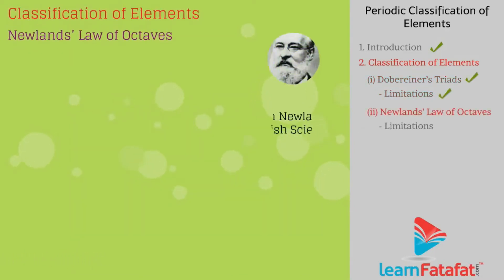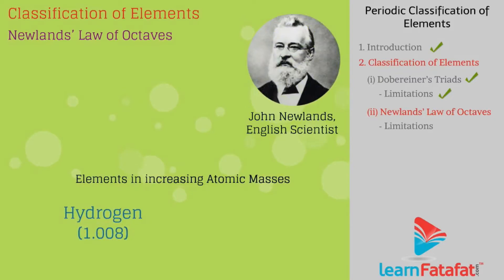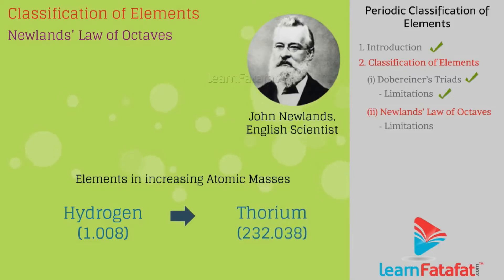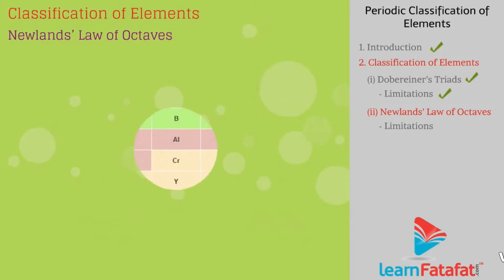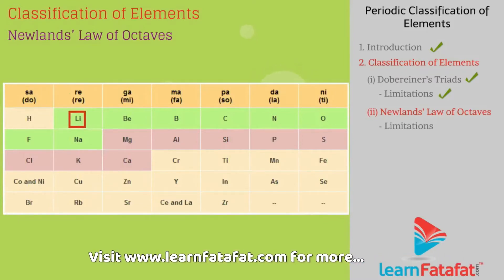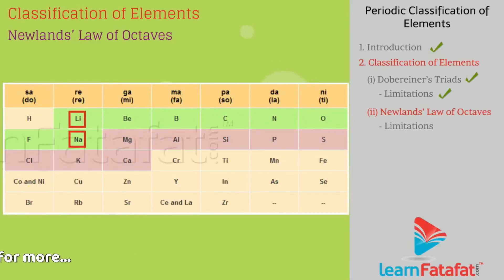Newlands' Law of Octaves. John Newlands, an English scientist, arranged the elements in order of increasing atomic masses, starting from hydrogen (1.008) to thorium (232.038). He found that every 8th element had similar properties to that of the first. For example, lithium and sodium have similar properties, and magnesium and calcium have similar properties.